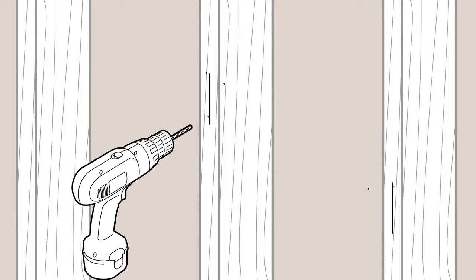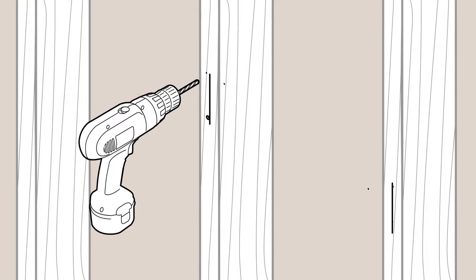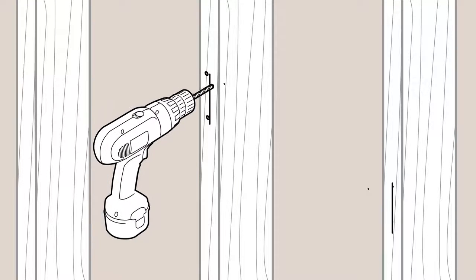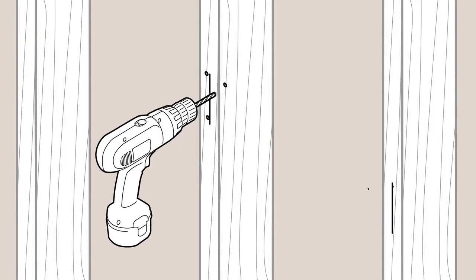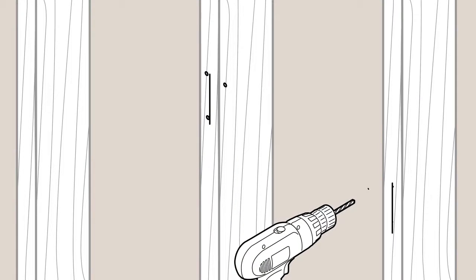Drill pilot holes into the studs with a 7/64-inch drill bit. If installing into tile, use a 1/4-inch carbide drill bit.